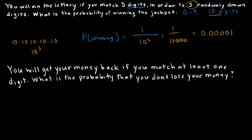This is actually a pretty nice lottery because a lot of them are worse. Let's say they're going to give me my money back if I match at least one digit, which means I could match one, two, three, four, or all five. The best idea here is instead of finding the probability of matching one, two, three, four, and five and adding all of those together, the probability of at least one would be one minus the probability of not matching any.